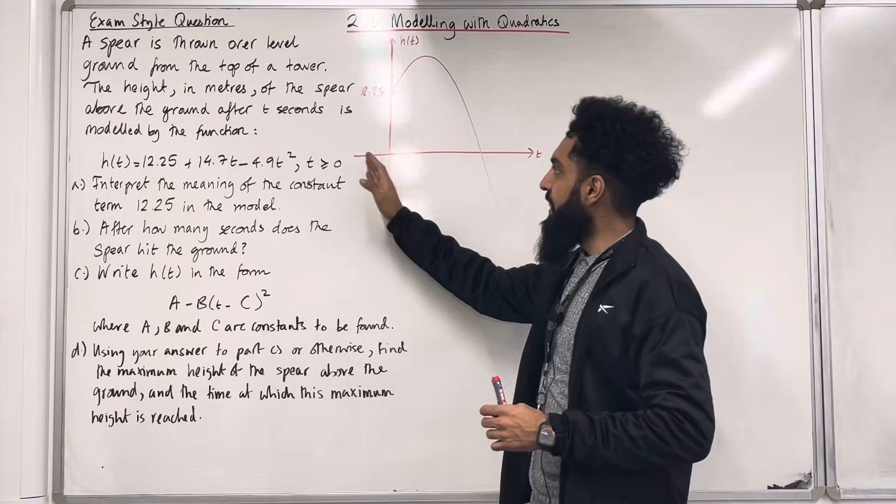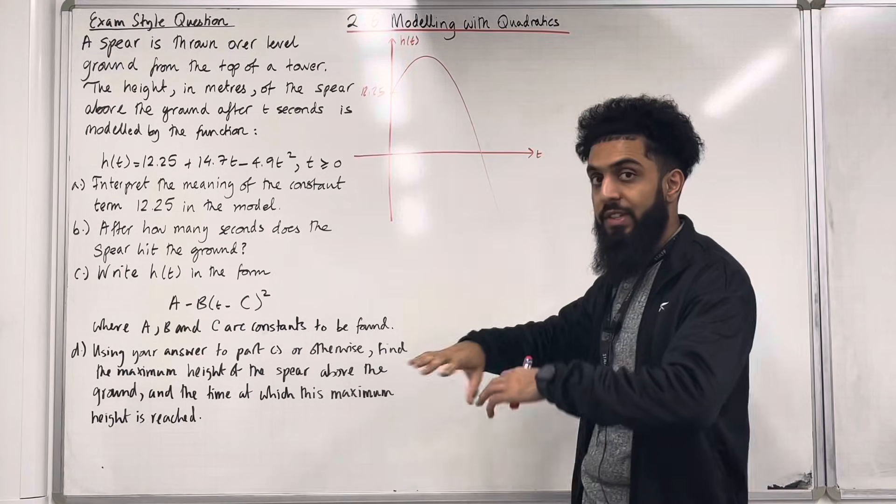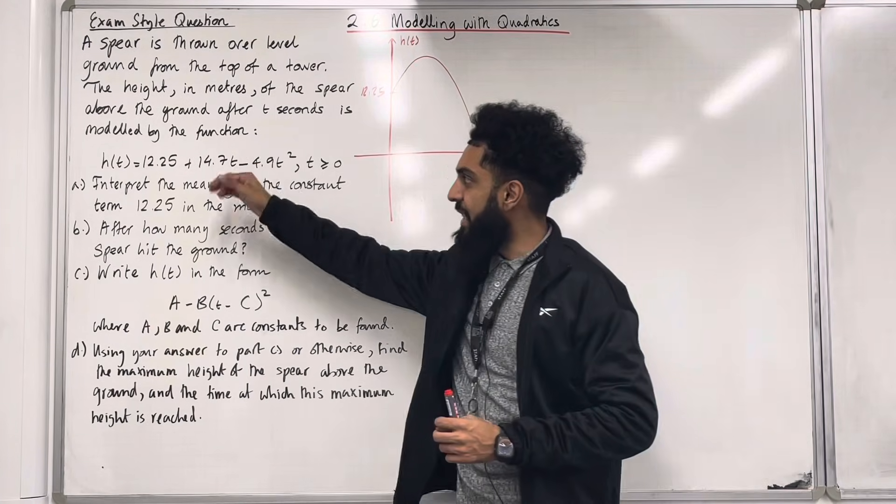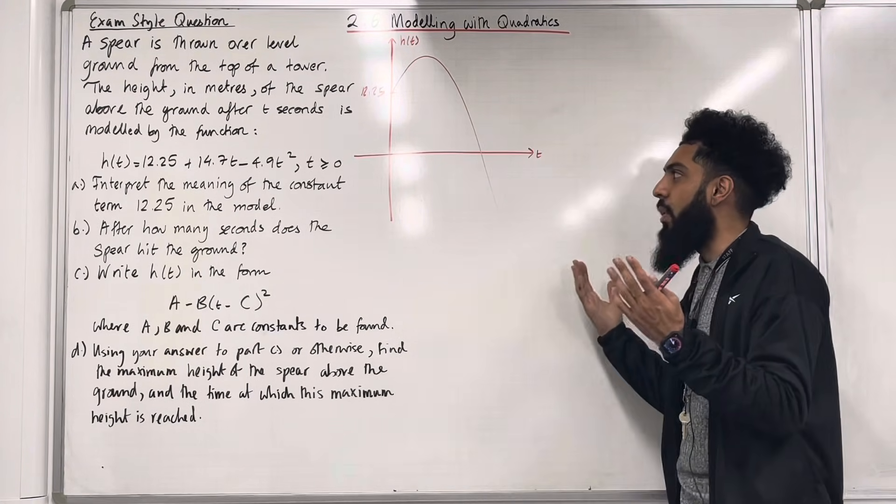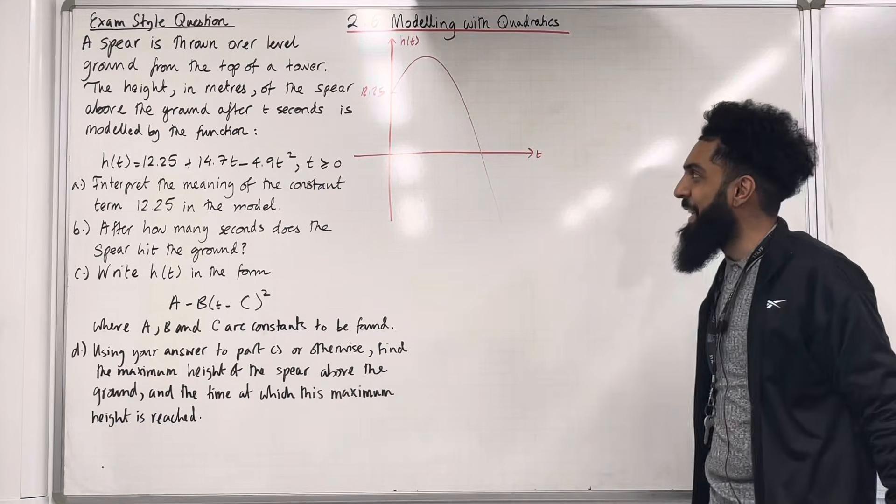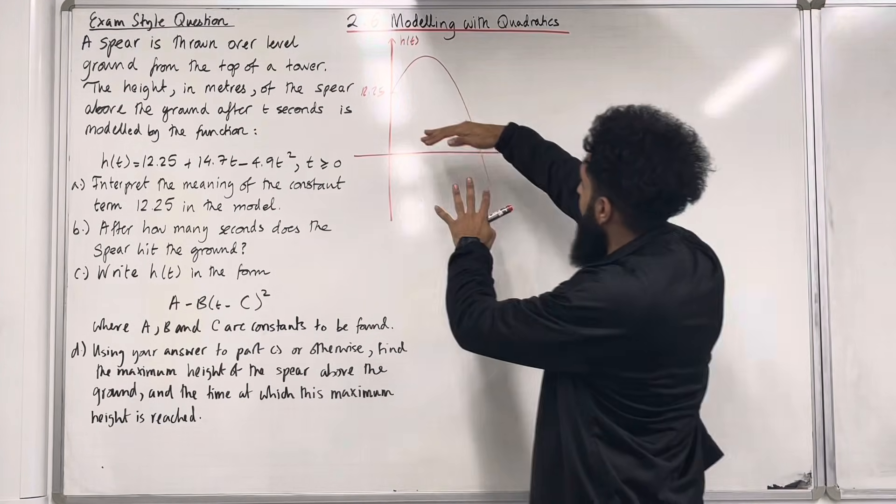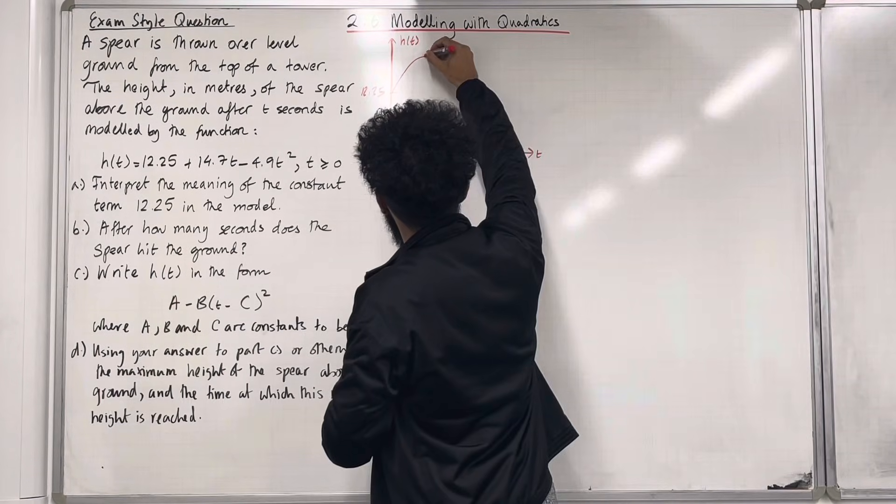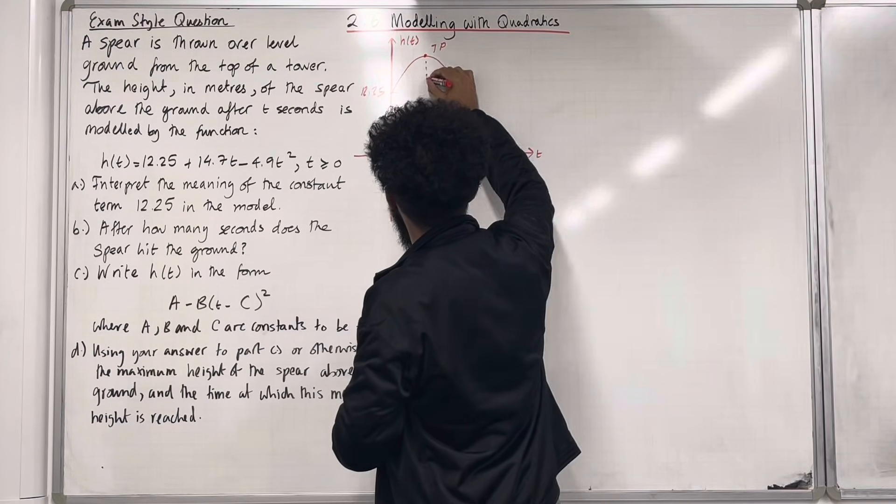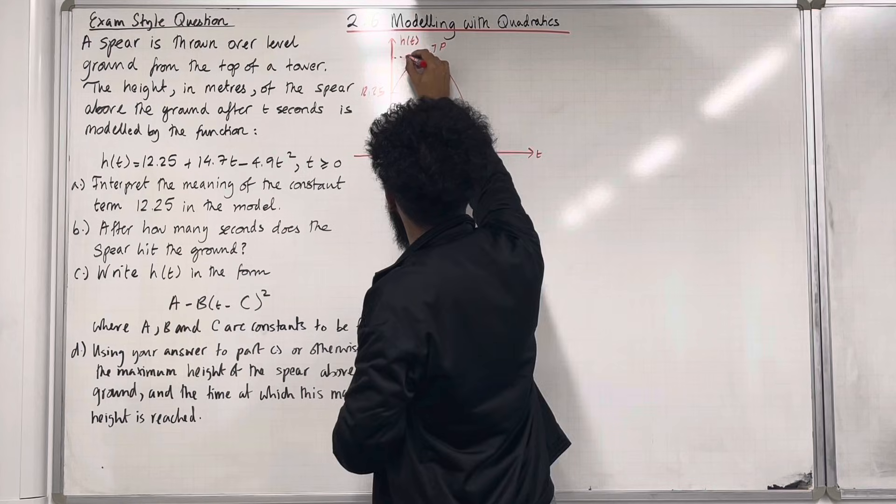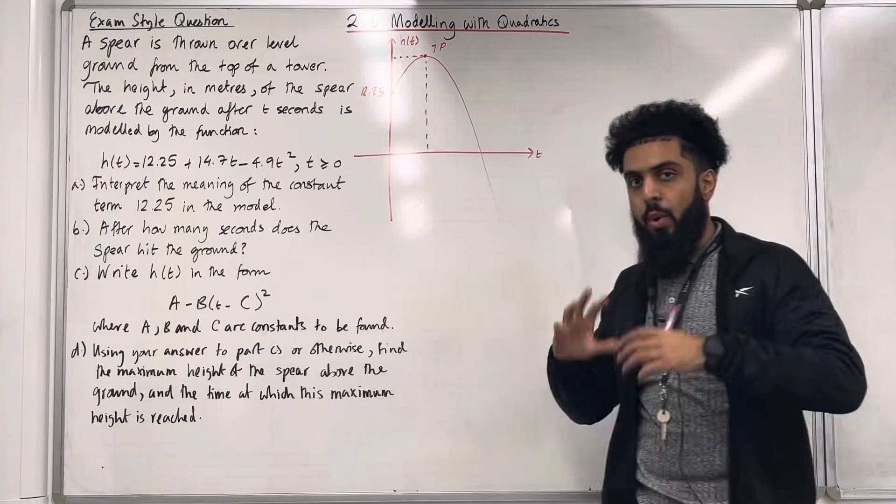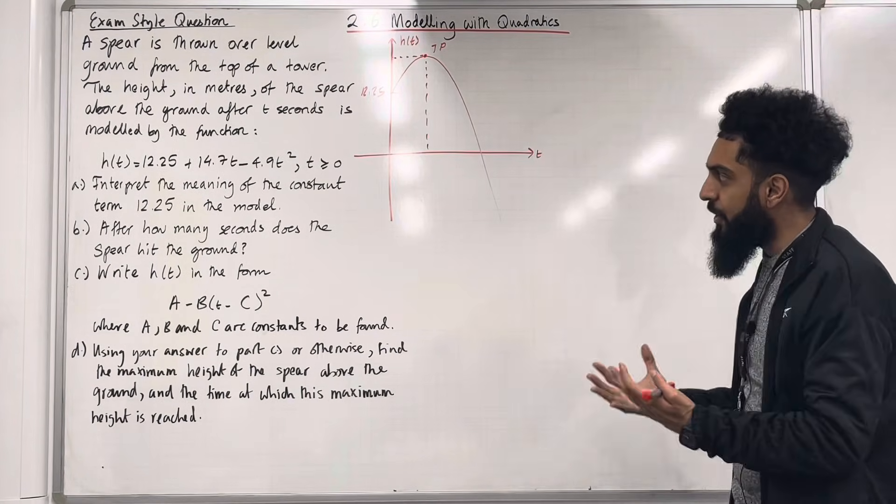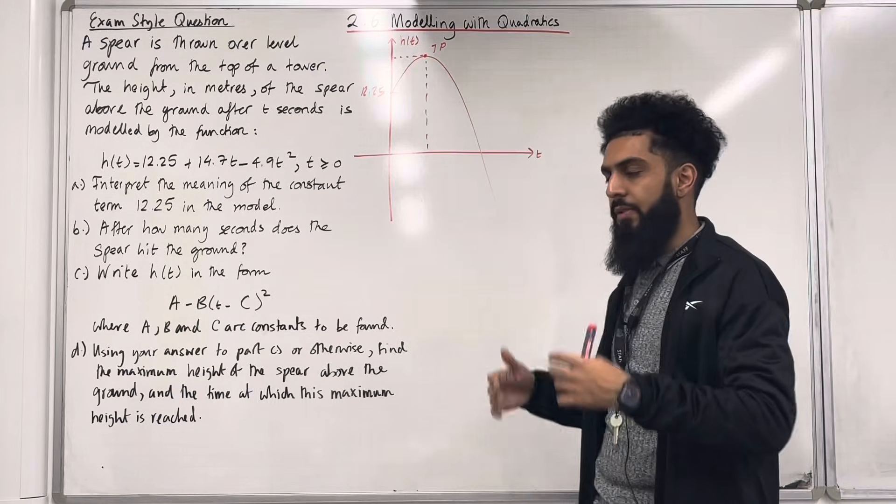So my graph will look something like this, a negative quadratic. Notice that for t is less than 0 that part of the curve I have not sketched because this function is defined for t is greater than or equal to 0. If you have a look at this quadratic graph it has a turning point over here. The way we find the coordinate of the turning point is to complete the square on our quadratic. So we're going to do that later on.